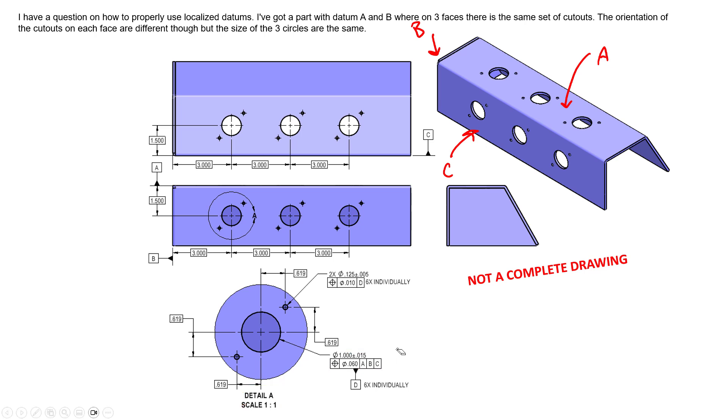Now what's interesting is we've added datum feature D. We've identified the large hole as datum feature D. And what we've added is this six times individually after the datum feature symbol. That means that individually we've created six separate datum Ds. It might be D1, D2, and so on and so forth for all of these. When you're inspecting this, it'd be very important to make sure that you've labeled them as such. We have various D datums.